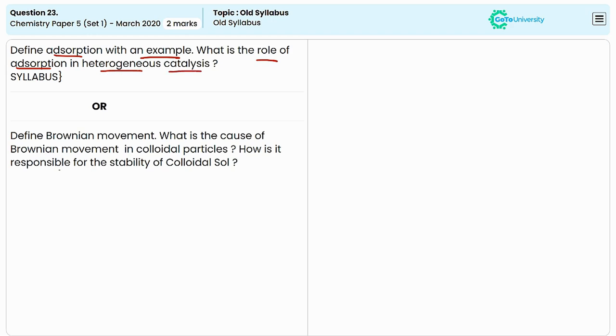Adsorption is the process by which molecules or ions from a substance adhere to a surface. This differs from absorption where the substance penetrates into the bulk of the material. Adsorption is key in many scientific and industrial processes and it can be categorized into physisorption and chemisorption.